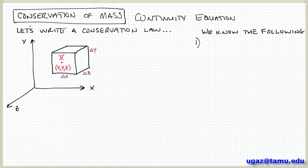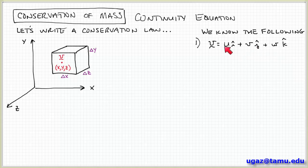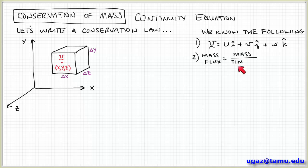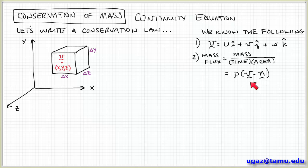So what do we know? We can express the velocity — we know that's a vector quantity — in Cartesian coordinates in terms of three components. So u, v, and w are the x, y, and z components of the velocity, and i, j, and k are unit vectors in the x, y, and z directions. From last time, we can express the mass flux — mass per unit time per unit area — through a surface as rho v dot n, where rho is the density, v is the velocity, and n is a normal vector normal to the surface.